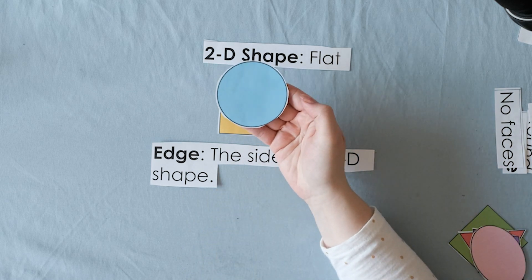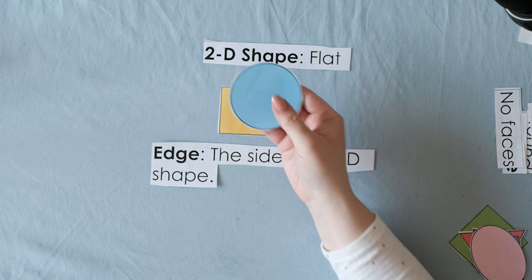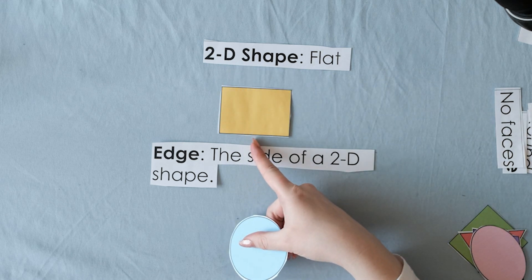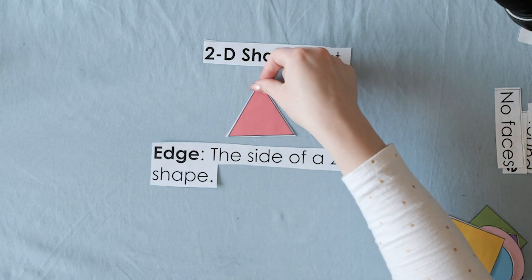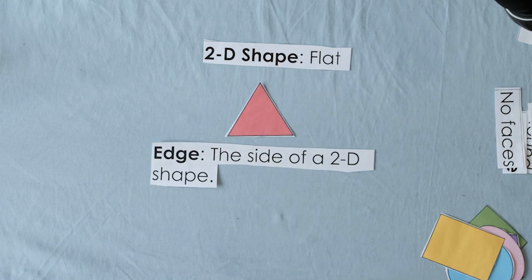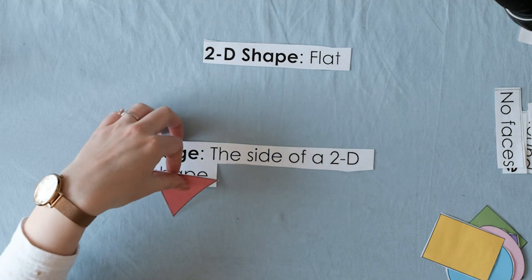Does the circle have edges? No, it doesn't. This circle has no edges. This rectangle has four. A triangle has three. So that's what an edge is. And it only happens for 2-D shapes.